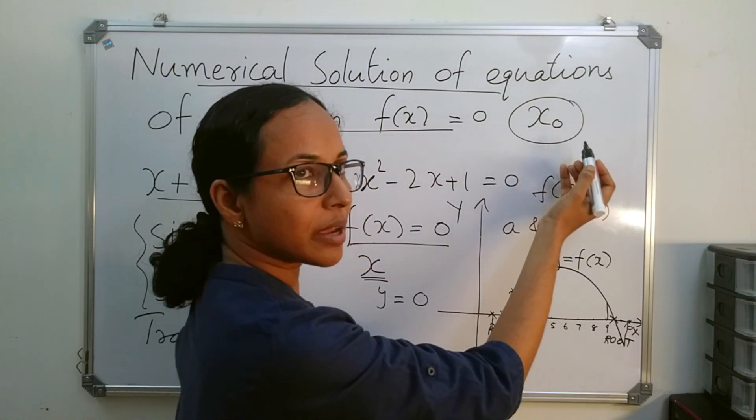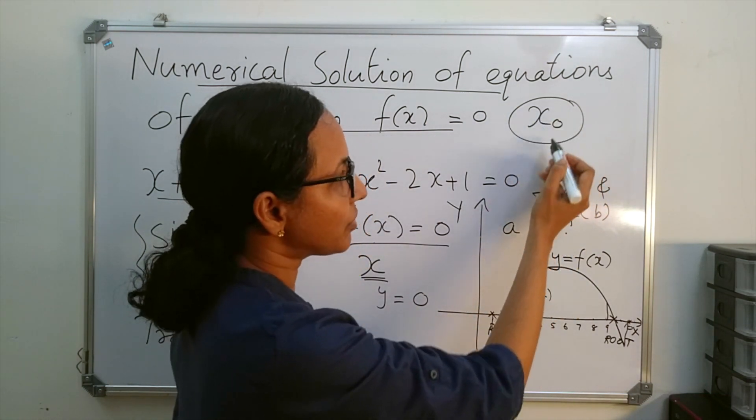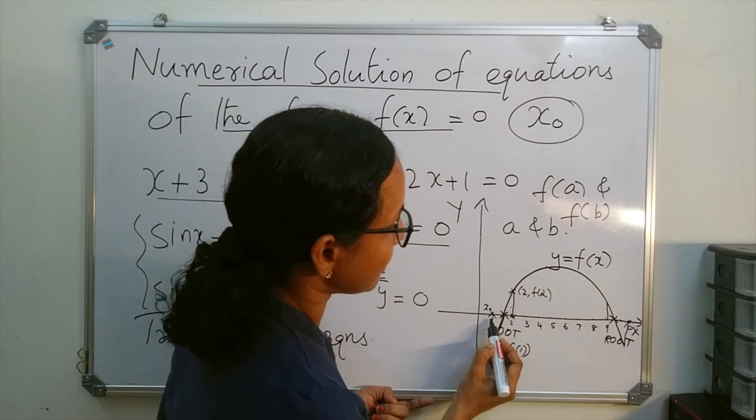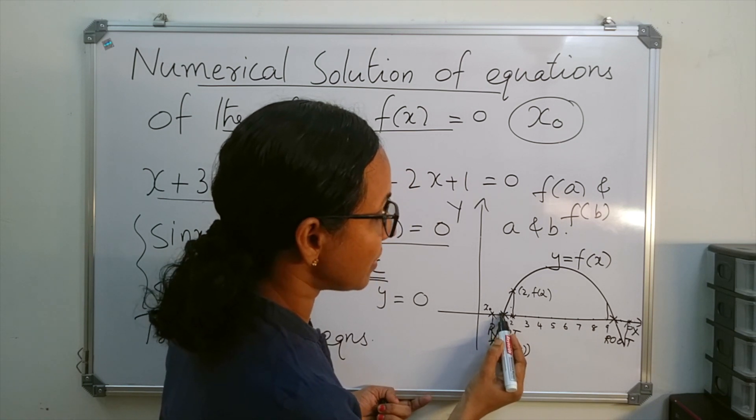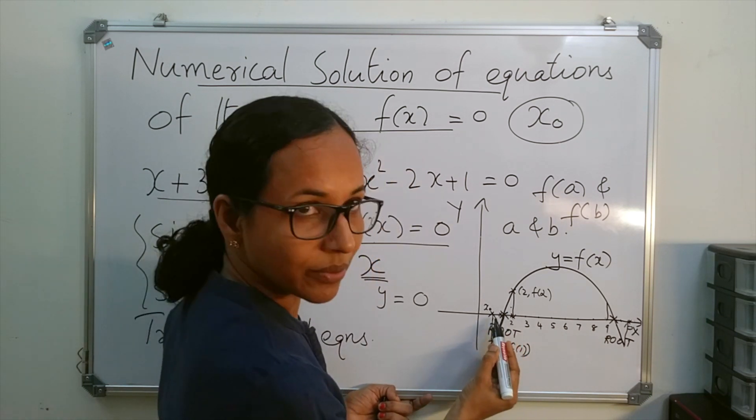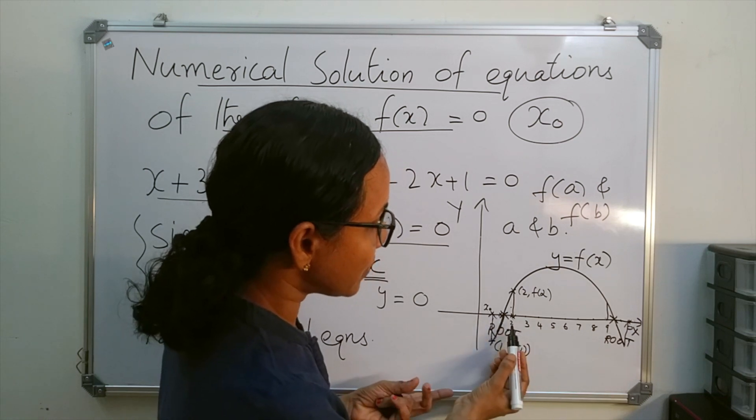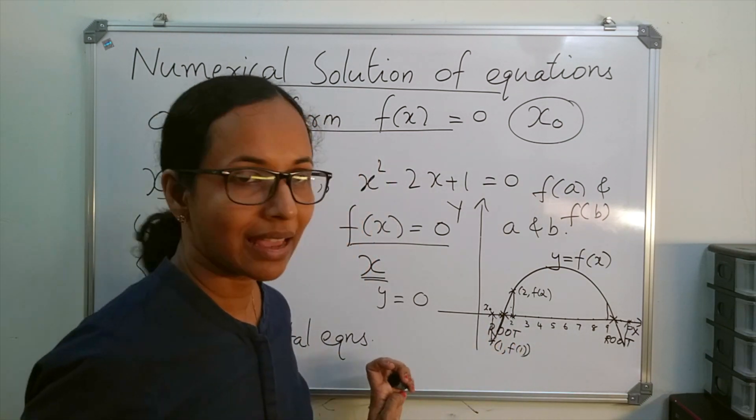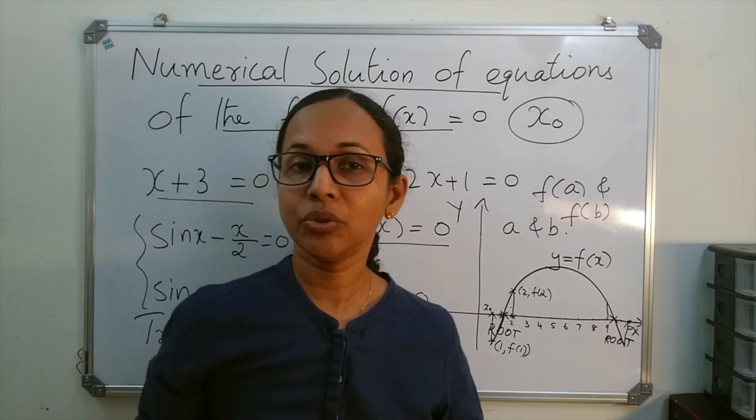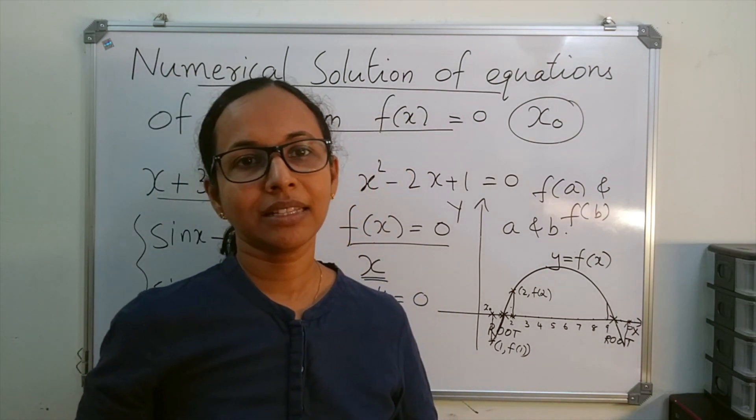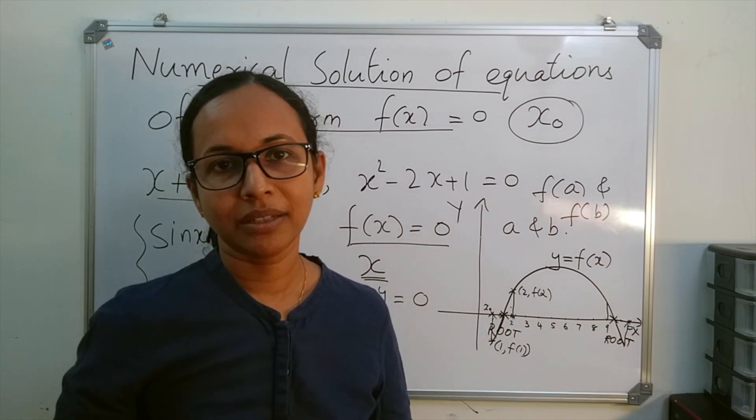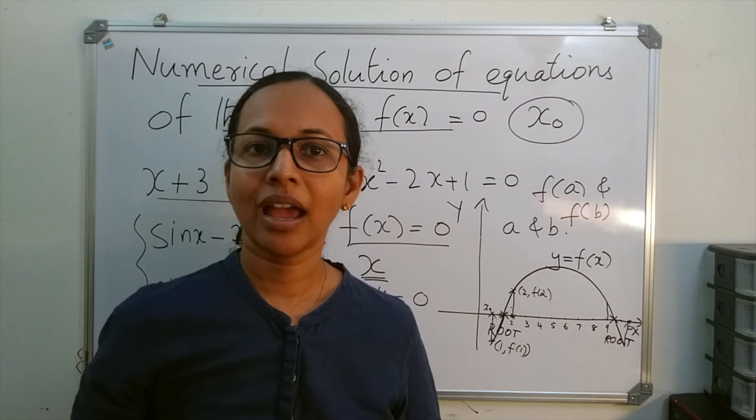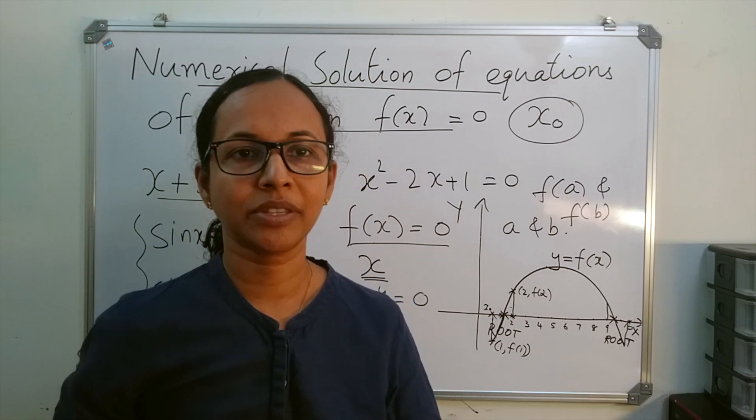After that, in finite jumps we will reach the root. In each step we improve the accuracy of this approximation. If you take x₀ as 1, in the second step you may reach this value, and you keep jumping towards the root. You have to learn two numerical methods: Newton-Raphson method and iteration method. In the next lecture I will explain Newton-Raphson method.